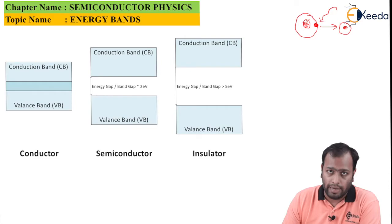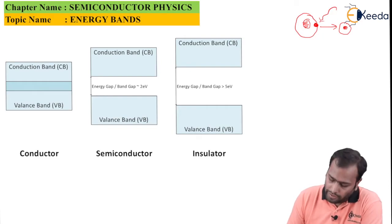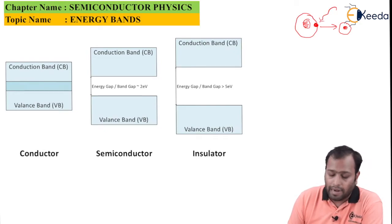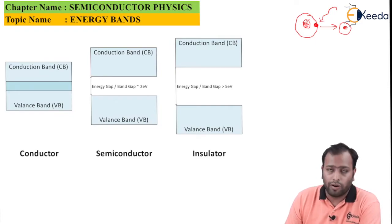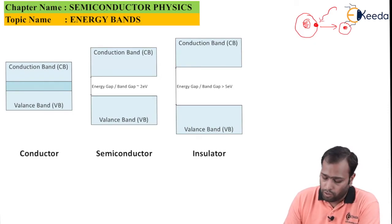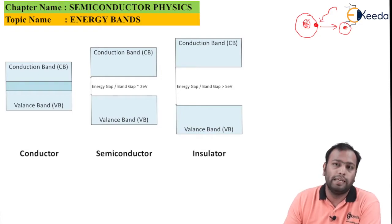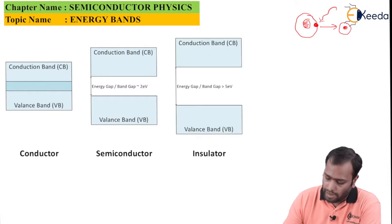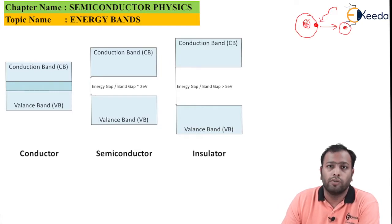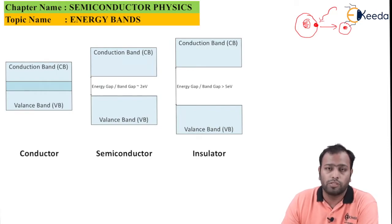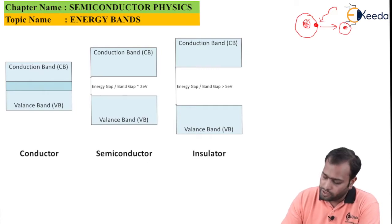In the case of a conductor, the valence band and conduction band are overlapped with one another. This means it does not matter which band the electron is in — if it's in the valence band, it is already about to conduct electricity. Because of this overlap, we do not require any additional effort for electricity to pass through a conductor.